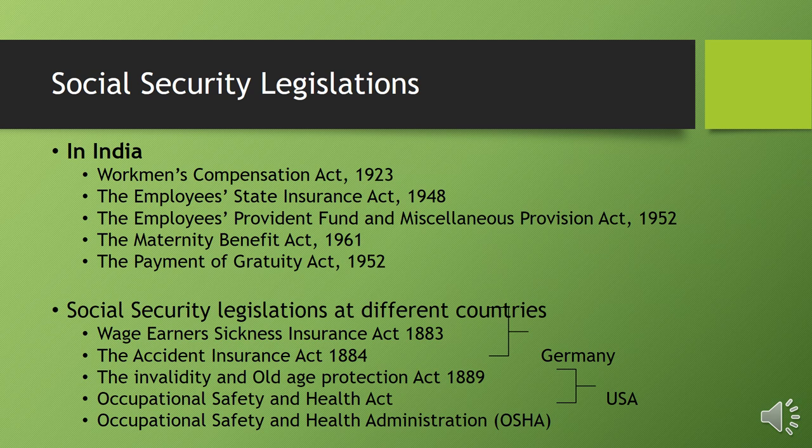Next, let us look at social security legislation in different countries and how other countries implement social security measures. A comprehensive social security system was originally introduced by Germany, which includes sickness insurance, accident insurance, old age pension insurance, and unemployment insurance. These benefits were provided through laws such as the Wage Earners Sickness Insurance Act 1883, the Accident Insurance Act 1884, and the Invalidity and Old Age Protection Act 1889, which comprehensively cover Germany's social security measures.